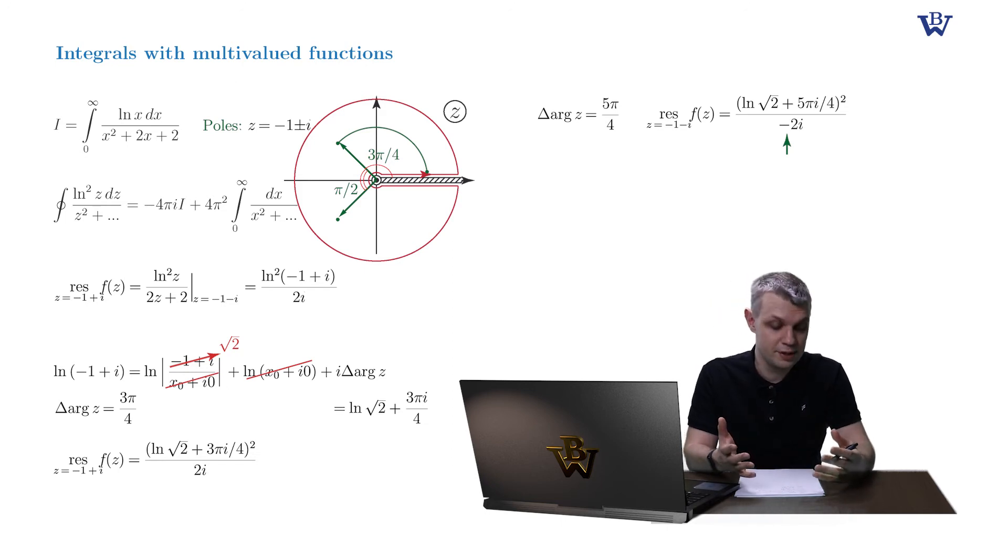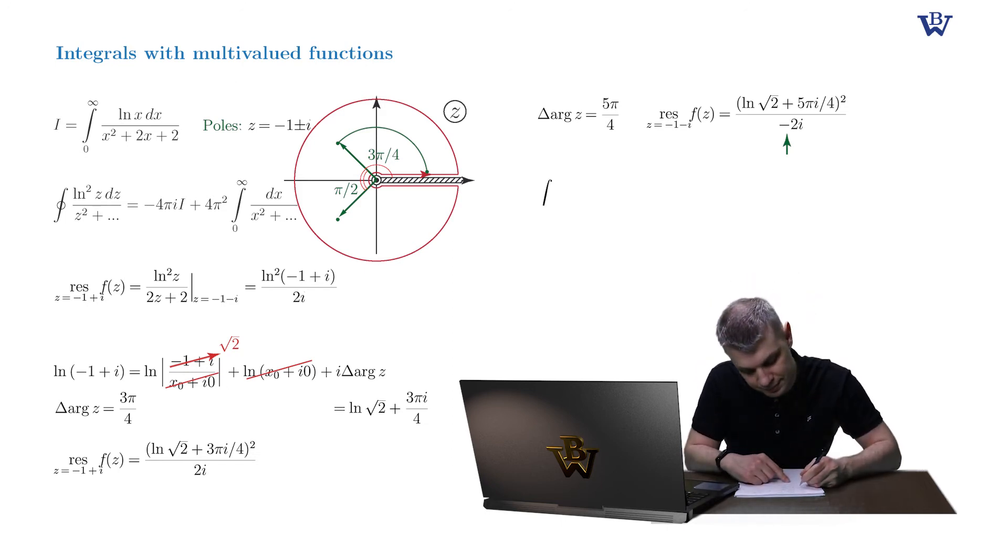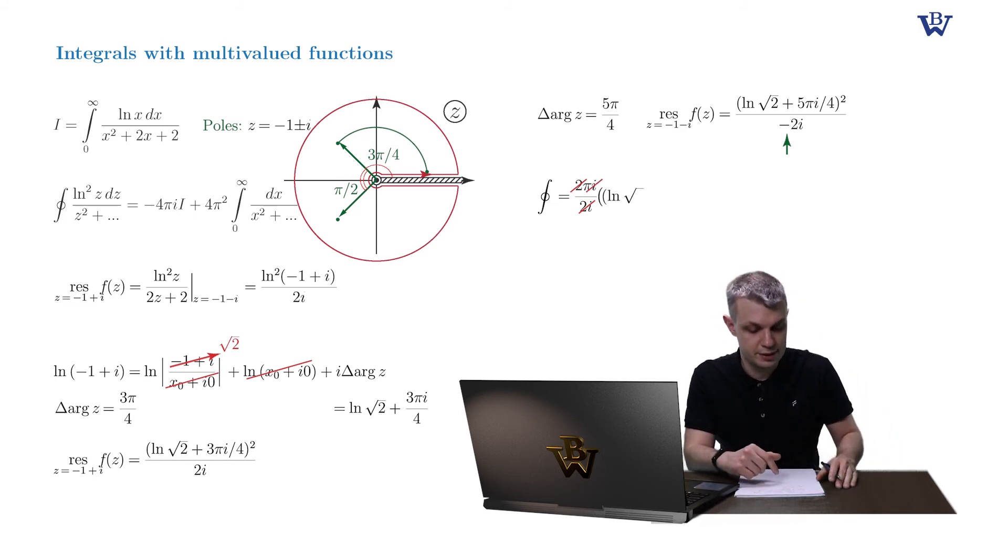And finally, we are ready to sum them up and get the expression of our closed contour integral. So they cancel out 2i in the denominator. So it's just pi times the difference of two full squares. So we'll just expand these two full squares and obtain the final answer.